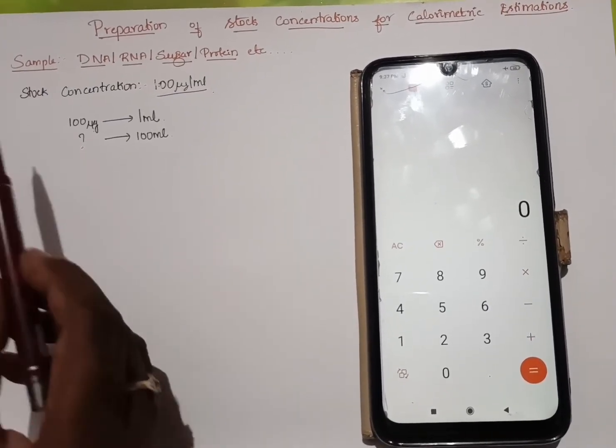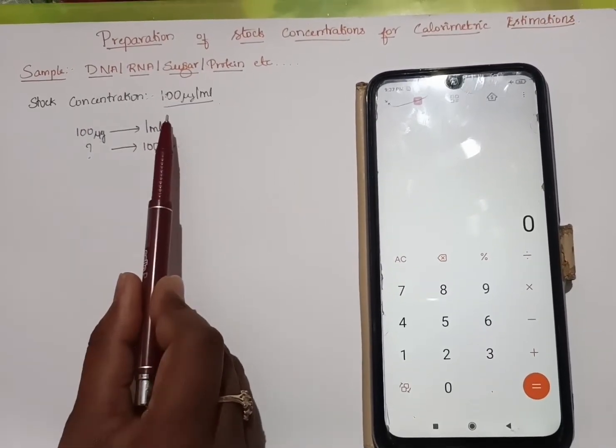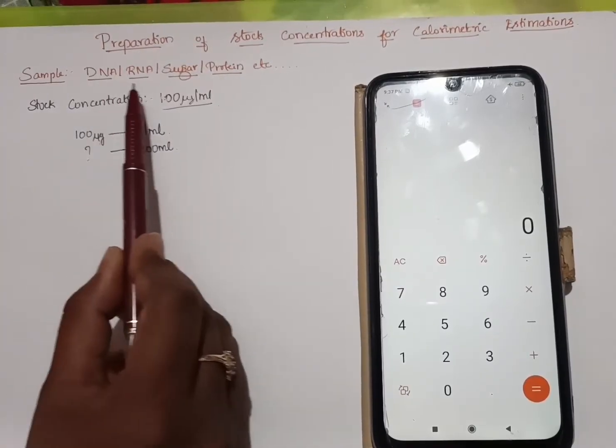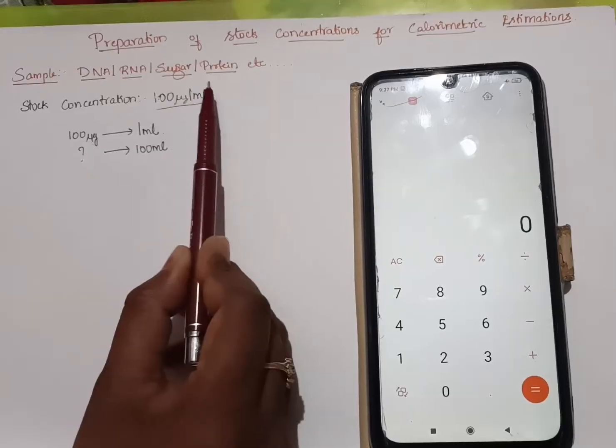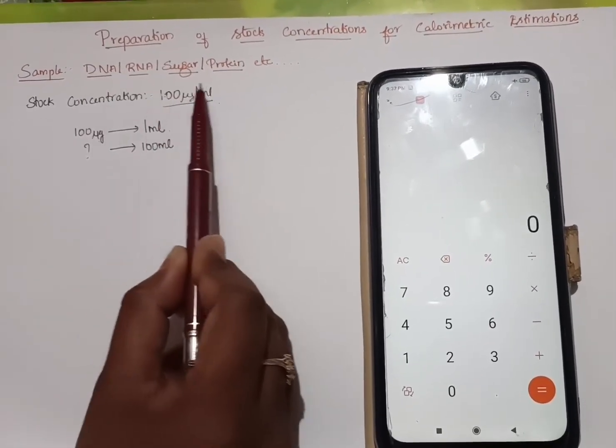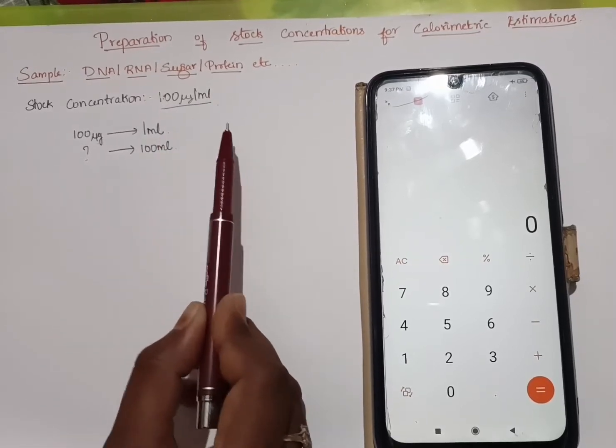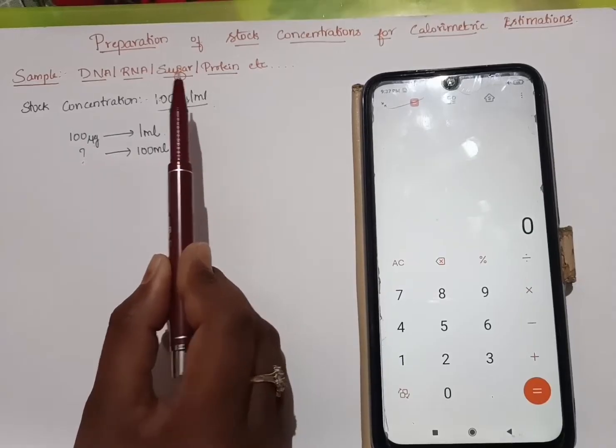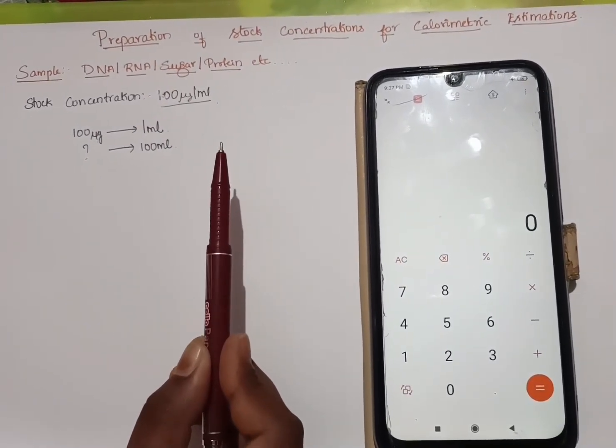Irrespective of any of these samples that I have written here, the preparation of stock concentration remains the same. All of these samples, whether DNA, RNA, sugar, or protein, will be available in powdered form. The commercially available form of these samples are usually powdered. So using that powder, how do we prepare the stock concentration is what we are going to learn.